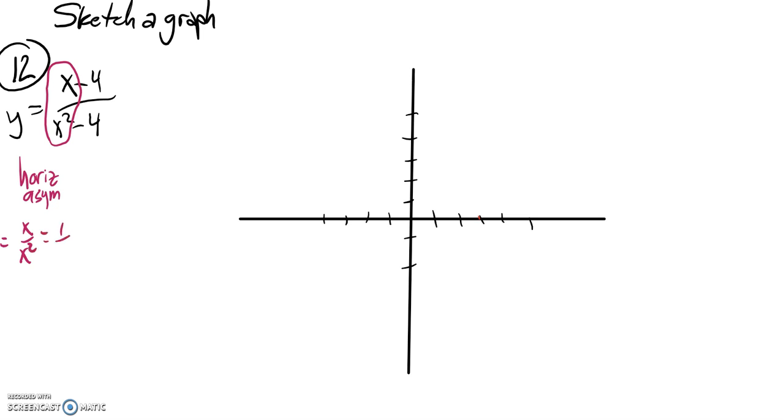So x over x squared reduces to 1 over x. As x gets really large, this thing tends to 0. So there we go, I have a horizontal asymptote right here at x equals 0. So there's my first part.